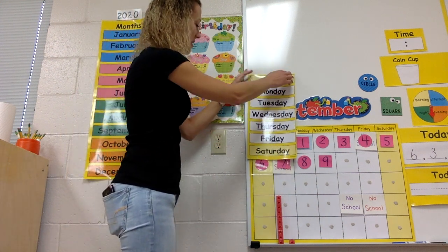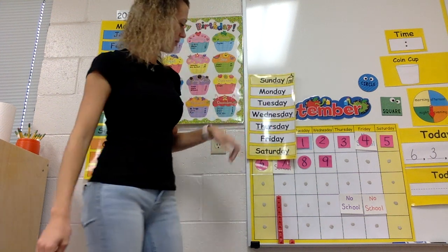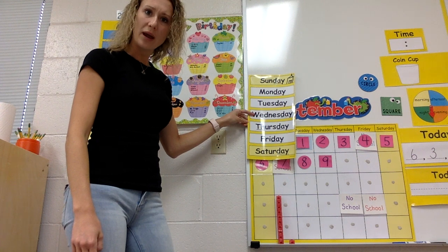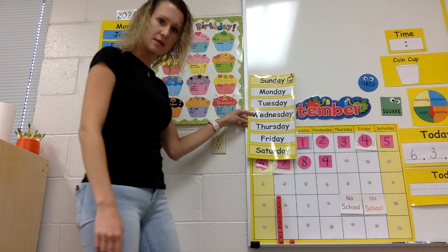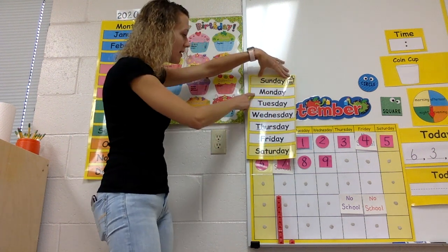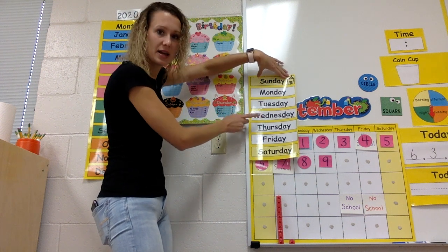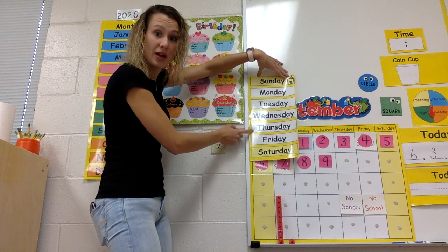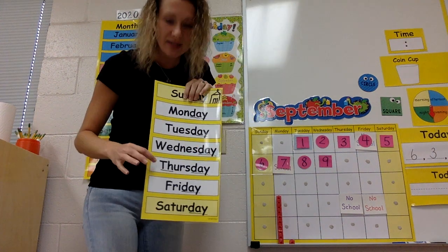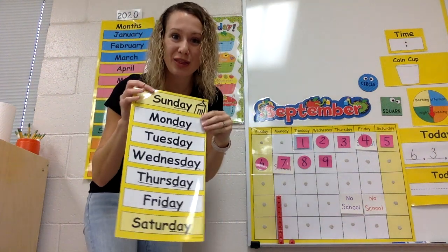If yesterday was Wednesday, what day comes after Wednesday? Sunday, Monday, Tuesday, Wednesday... Thursday! Say: today is Thursday. Today is Thursday.